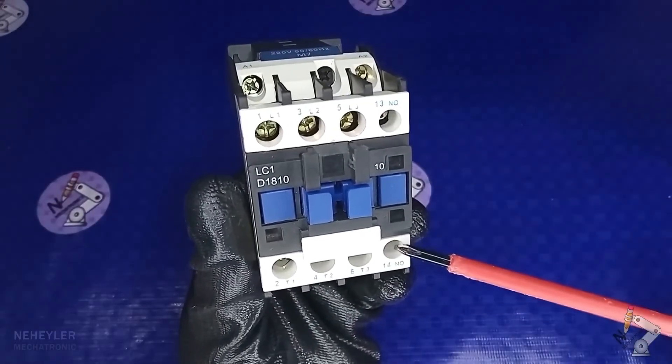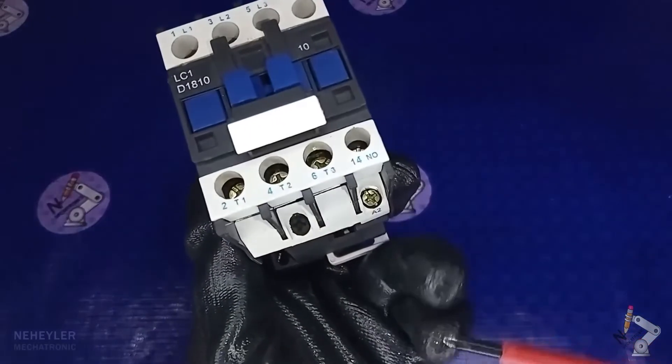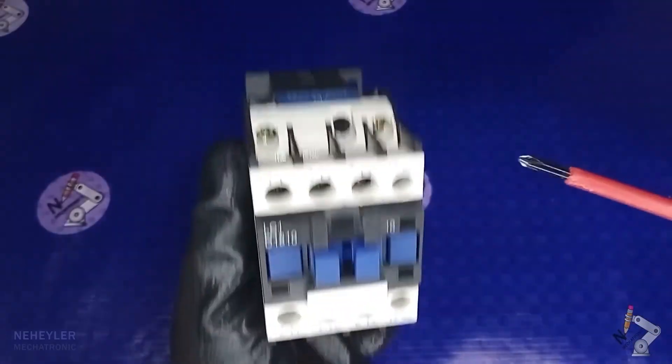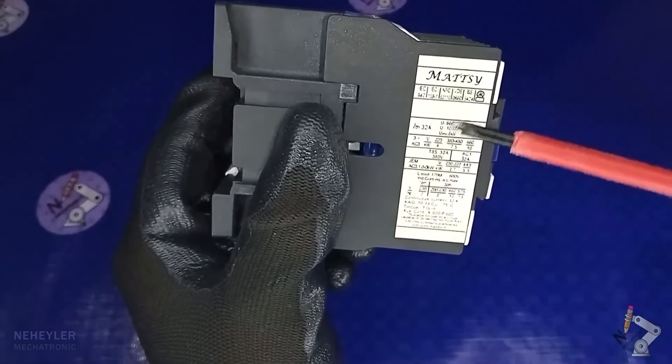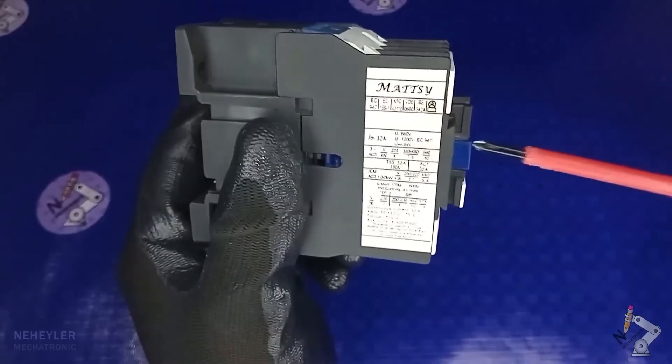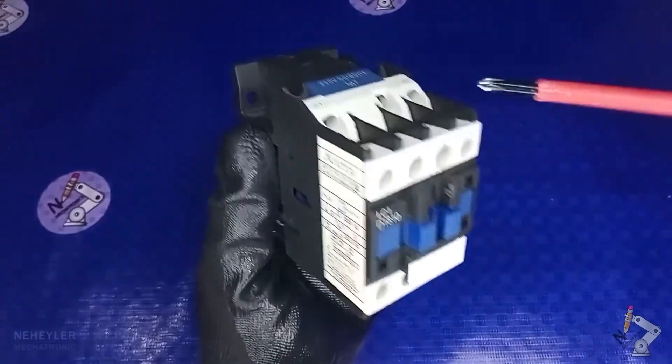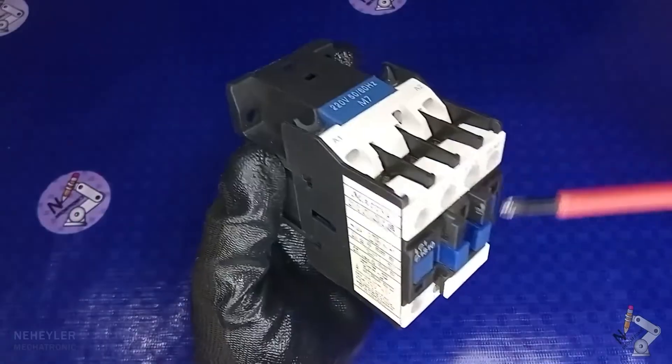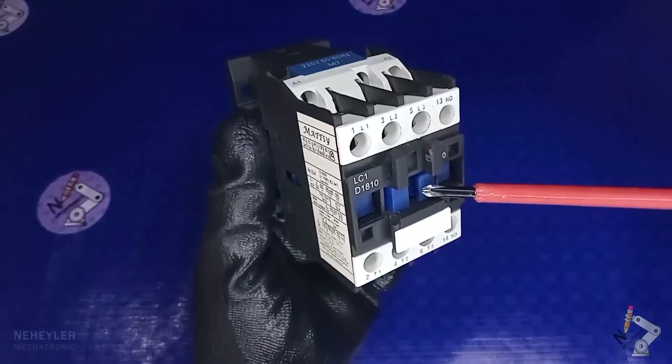While terminals 13 and 14 are part of a normally open auxiliary contact. At the bottom we have terminal A2, which is the same as the one up here. Here they give us a table with specifications of current, voltage, power and more additional data that will be explained in more detail later. When the coil is energized through terminals A1 and A2, this moving part retracts, allowing all contacts to be closed or bridged.